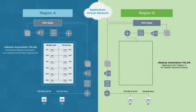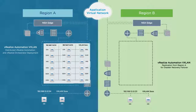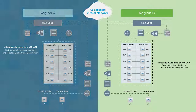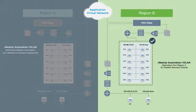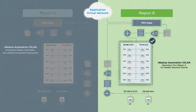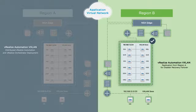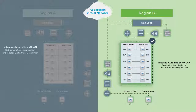Application Virtual Networks eliminate the need to change IP addresses during failover by migrating both the virtual machines and their private networks. At the recovery region, a separate NSX Edge Services Gateway takes over the routing, NAT, and firewall services for the application, which runs unaltered on the same isolated network that was used in the primary region.